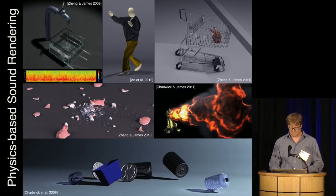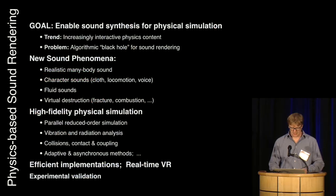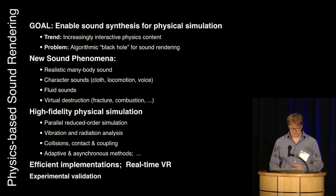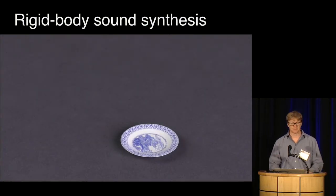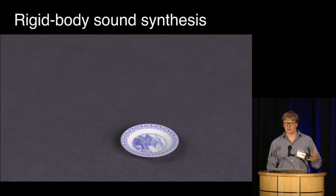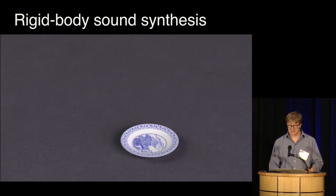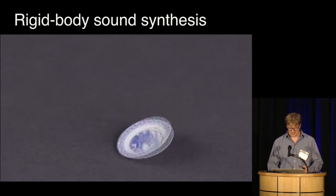Here are some different phenomena we've looked at over the years. The basic problems are how do we model different phenomena — water, solids, fracture, characters — and then how do we come up with algorithms that can be evaluated efficiently on modern hardware. One of the bread-and-butter models is a solid rigid object, which has rigid modes of vibration and rigid body accelerations. Together, we can model these motions to get sounds like this.